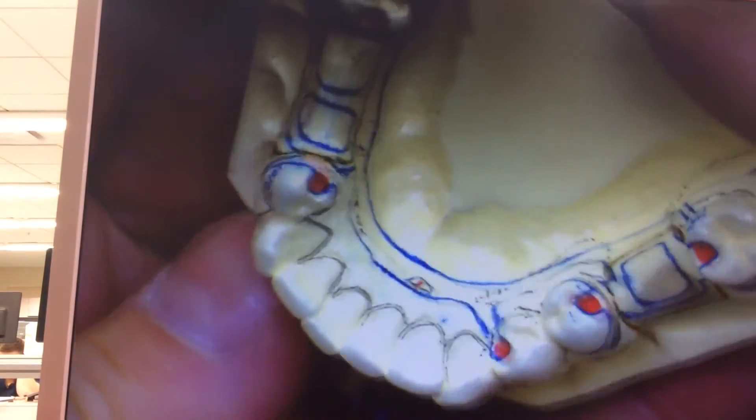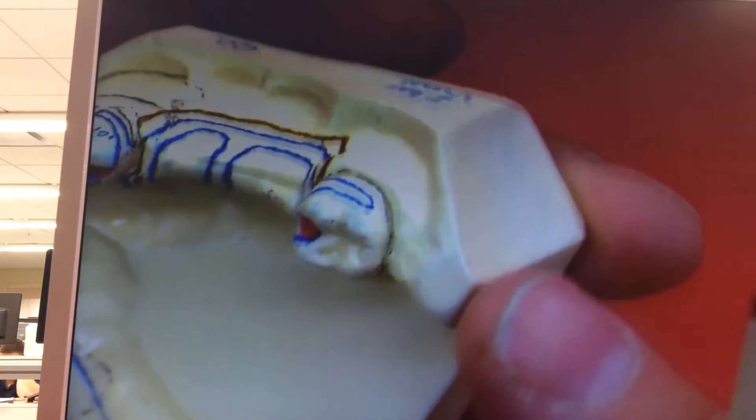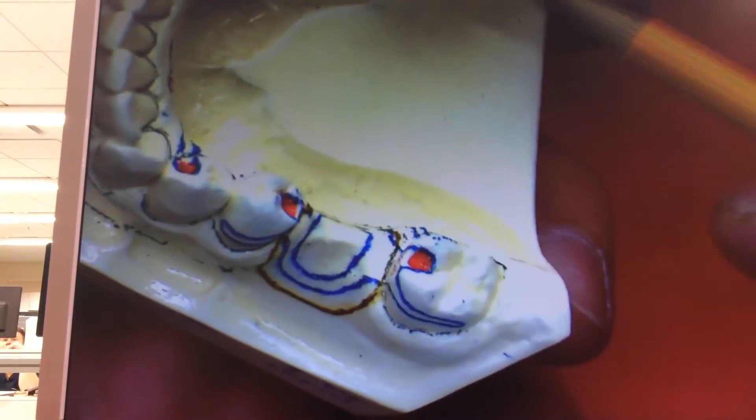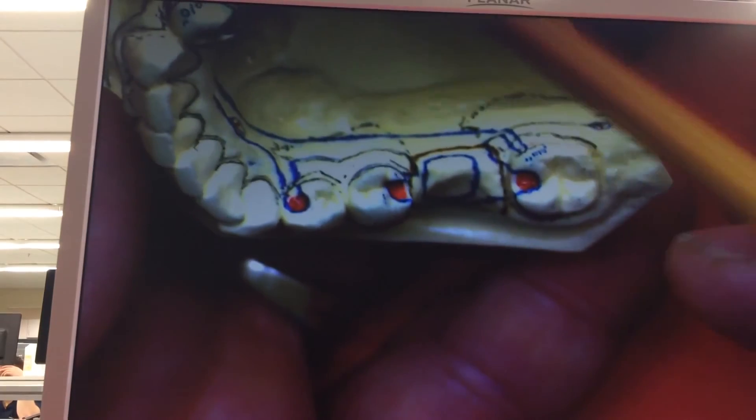As long as you have that 0.01 inch undercut someplace, you're okay. No acrylic down into the vestibule on the lingual. Again, we're not gaining any support from the tissue. It's simply tooth supported.